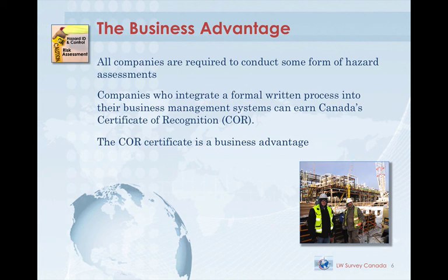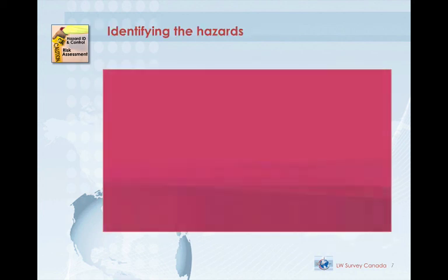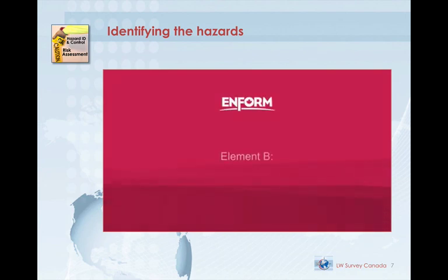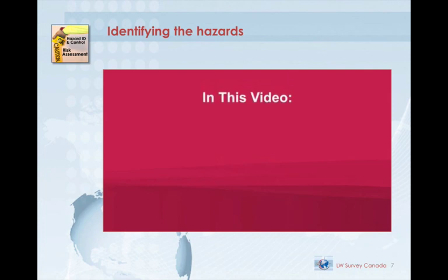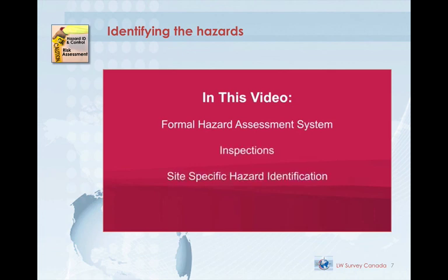This next video clip, publicly available from N-Form, Canada's Oil and Gas Safety Association, is an excellent overview of the process. Welcome to N-Form's Info Session video on Element B of the Core Audit Protocol, Formal Hazard and Risk Assessments. In this video, we will talk about the components of a formal hazard assessment system, inspections, site-specific hazard identification, and the key differences between them.